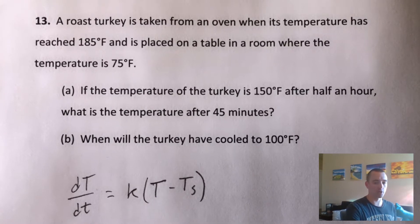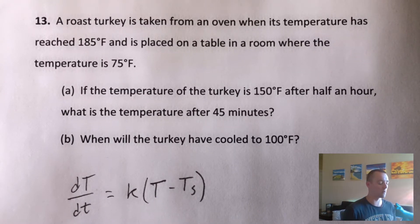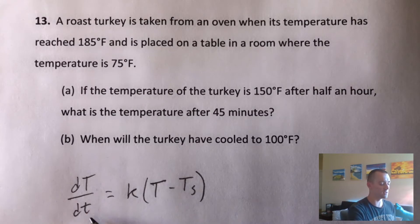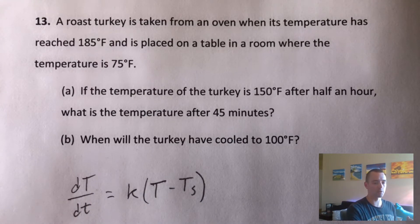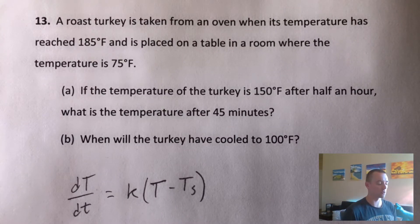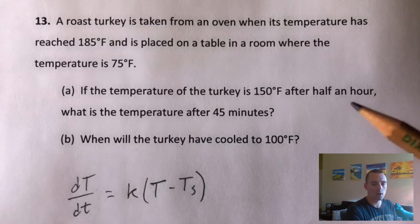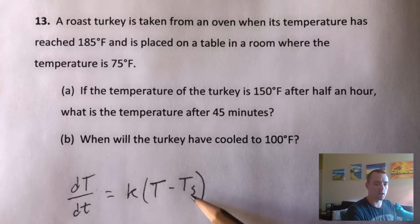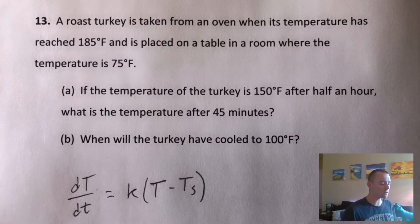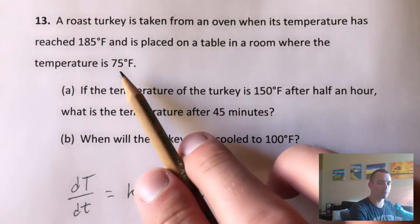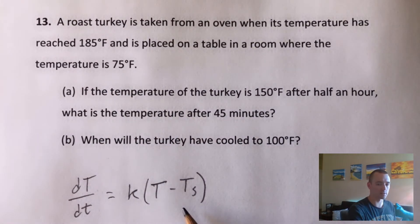I've already gone ahead and jotted down the formula from my calculus two study guide — that is the formula for Newton's law of cooling. This formula has dT/dt, where we have a capital T and a lowercase t. The big T is the temperature of the object, in this case the temperature of the turkey. The little t is the time that has passed — how long it's been since it was taken out of the oven. Then we have this constant K, which is an unknown constant we're going to have to figure out. And then we have TS, which represents the temperature of the surroundings — we know the turkey is placed in a room with a temperature of 75 degrees, so 75 is going to be our TS.